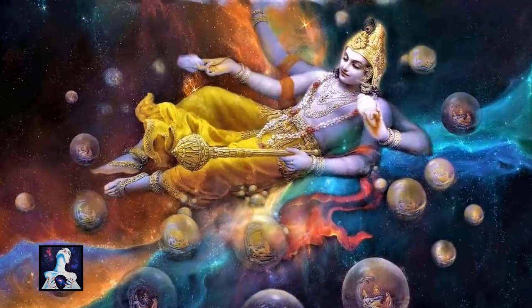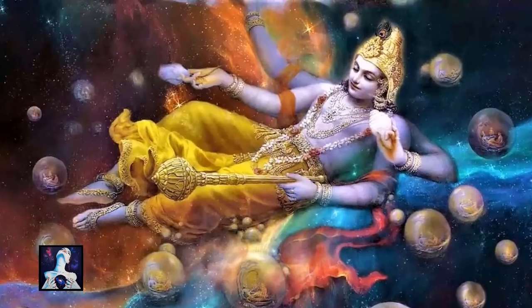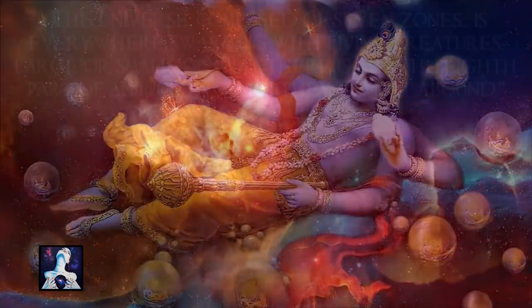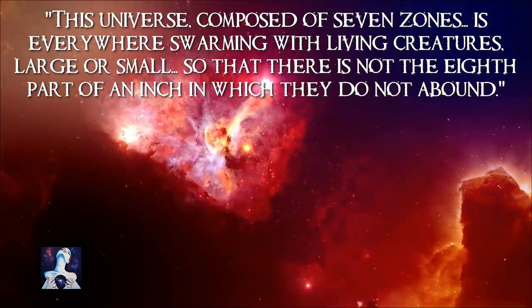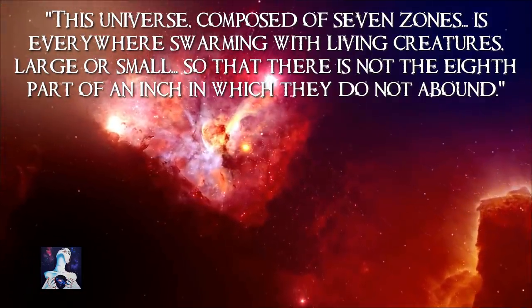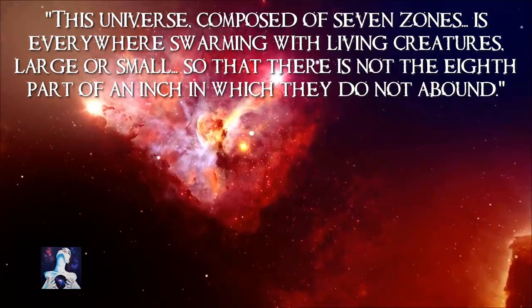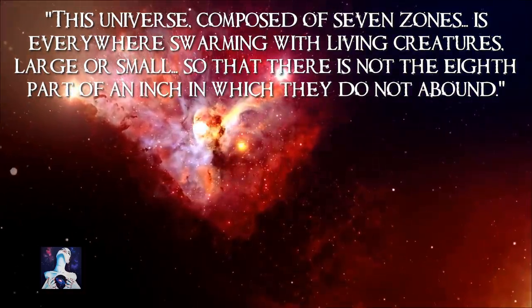The following passage from the ancient Hindu text, the Vishnu Purana, states much the same thing. This universe, composed of seven zones, is everywhere swarming with living creatures, large or small, so that there is not the eighth part of an inch in which they do not abound.